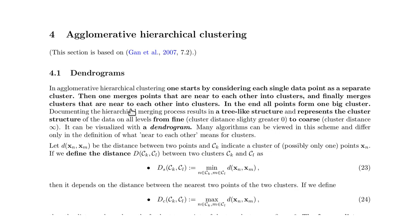The gradual merging of clusters into larger clusters leads to a tree-like structure. With very fine branches in the beginning if you do agglomerative hierarchical clustering, and then fusing more and more of these leaves until you end up with a trunk that represents all the points as one cluster.